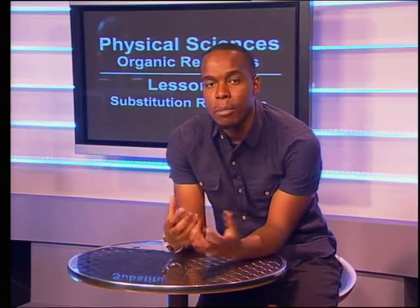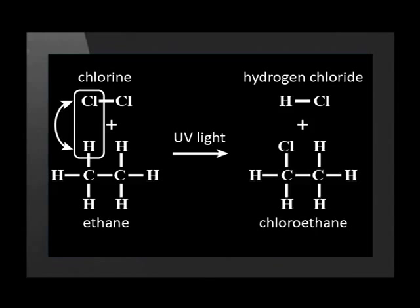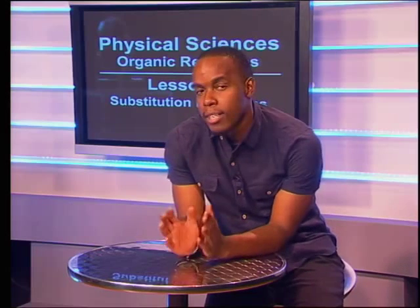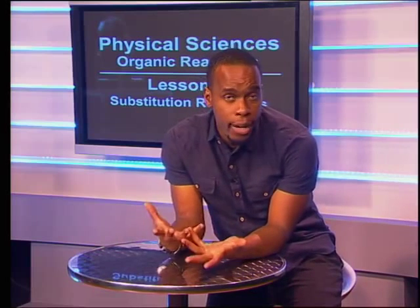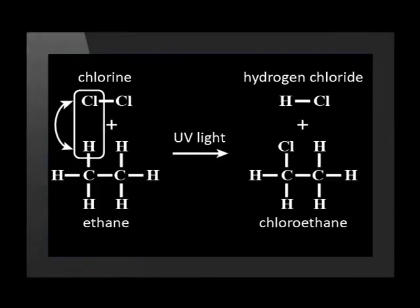Let's see how organic molecules do this. The chlorine atom swaps places with the hydrogen atom in ethane. The products of this reaction are chloroethane and hydrogen chloride. Saturated hydrocarbon molecules, like alkanes, do not react readily with halogens. Notice that UV light was written above the arrow in the reaction.